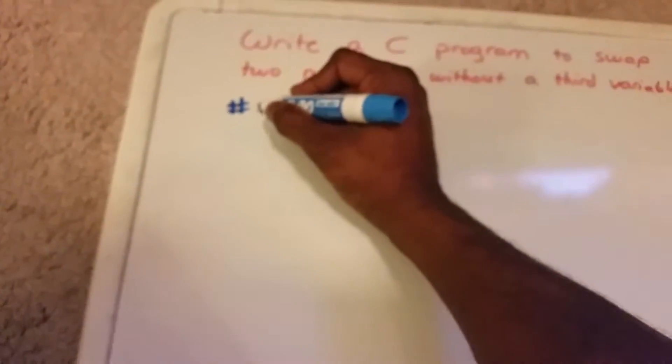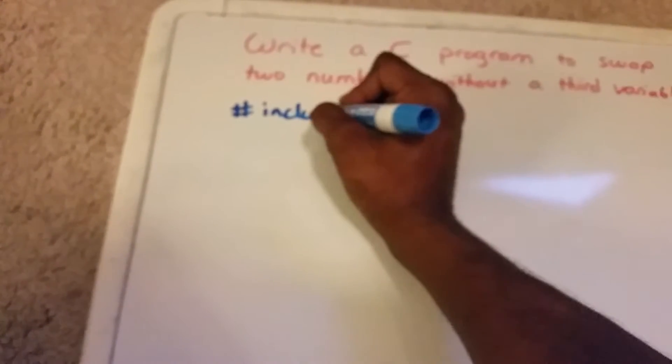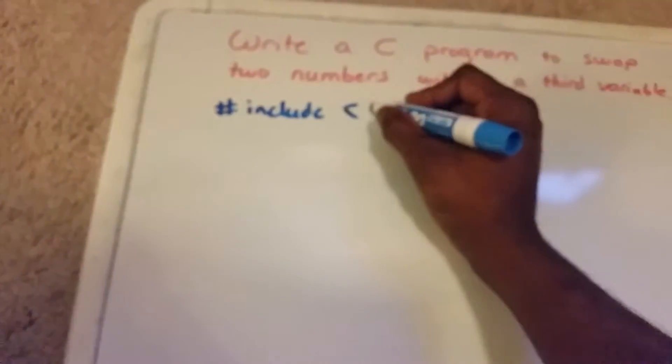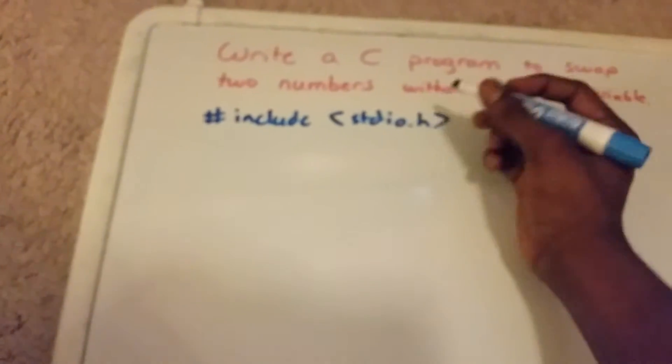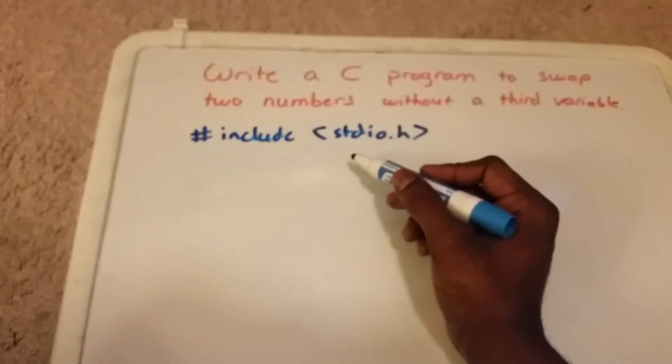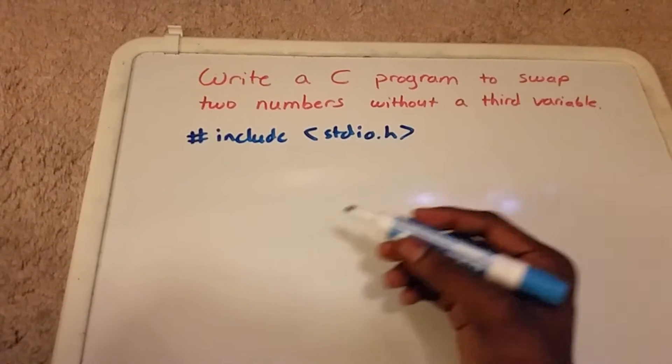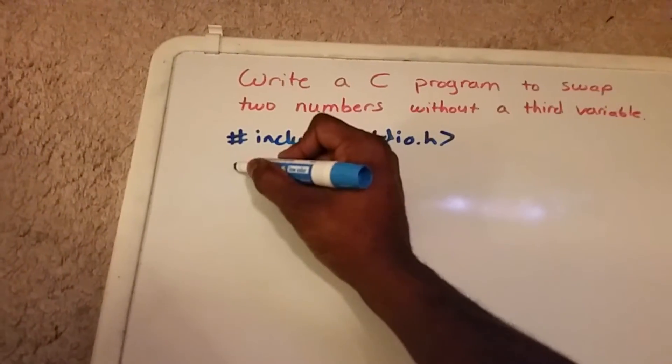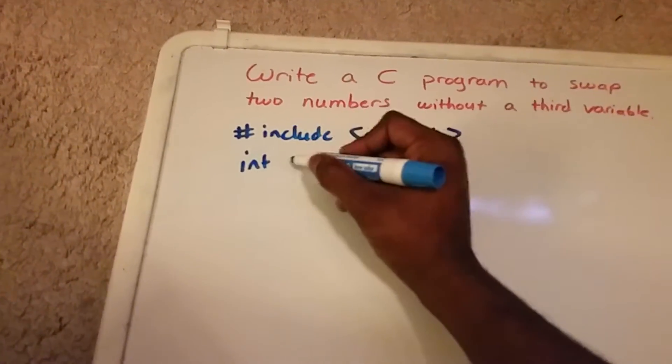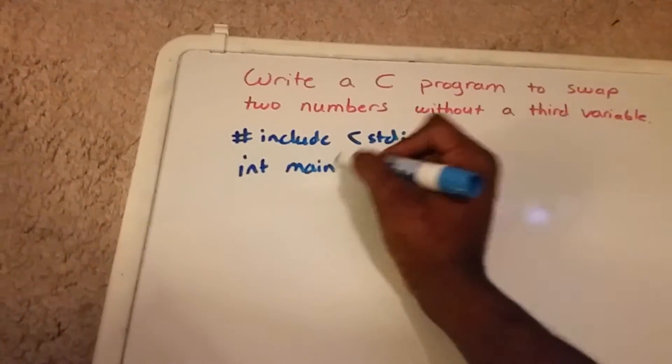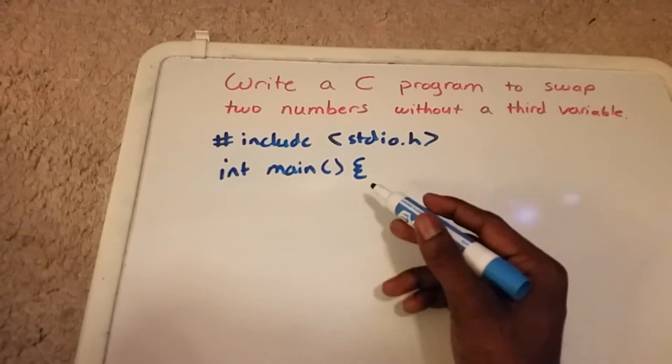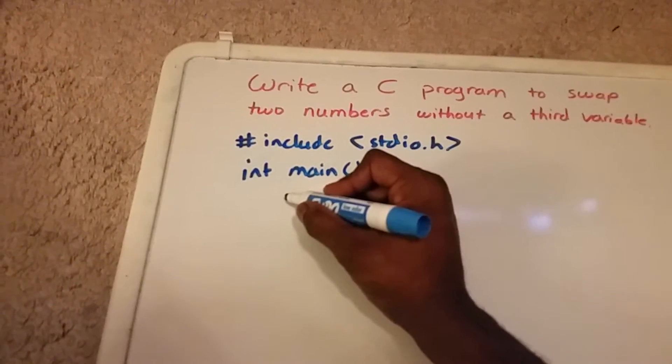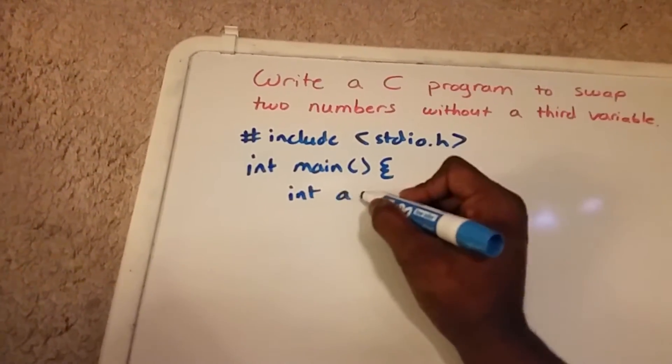...we need to get the library, so we're going to include the standard input-output header file, that's stdio.h. And we need the main function, integer main function, curly brace for starting. We're going to have our two variables a and b.